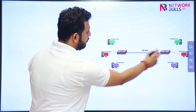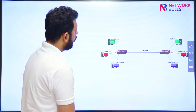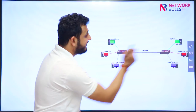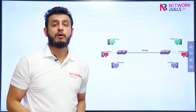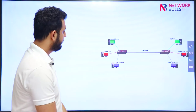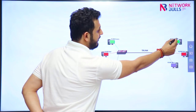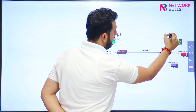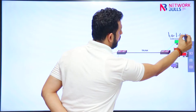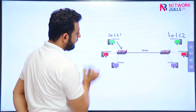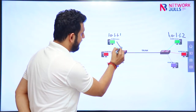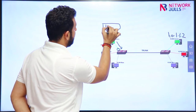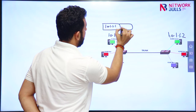Between the switches we have a single physical link. When a VLAN green user wants to communicate with another VLAN green user, that communication is successful over this single link using tagging. For example, a VLAN green user with IP 10.1.1.1 is trying to communicate with the user at IP 10.1.1.2. When this user sends traffic to the switch, the switch knows which VLAN this user belongs to — VLAN green. The traffic has source 10.1.1.1 and destination 10.1.1.2.